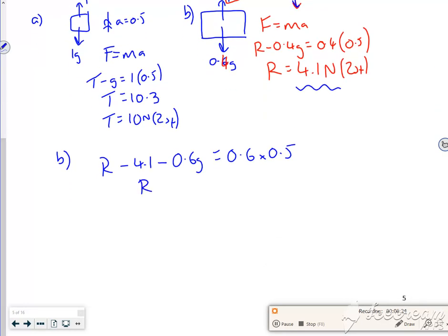So that rearranges roughly as 10.3, so 10 newtons to 2 sig figs.